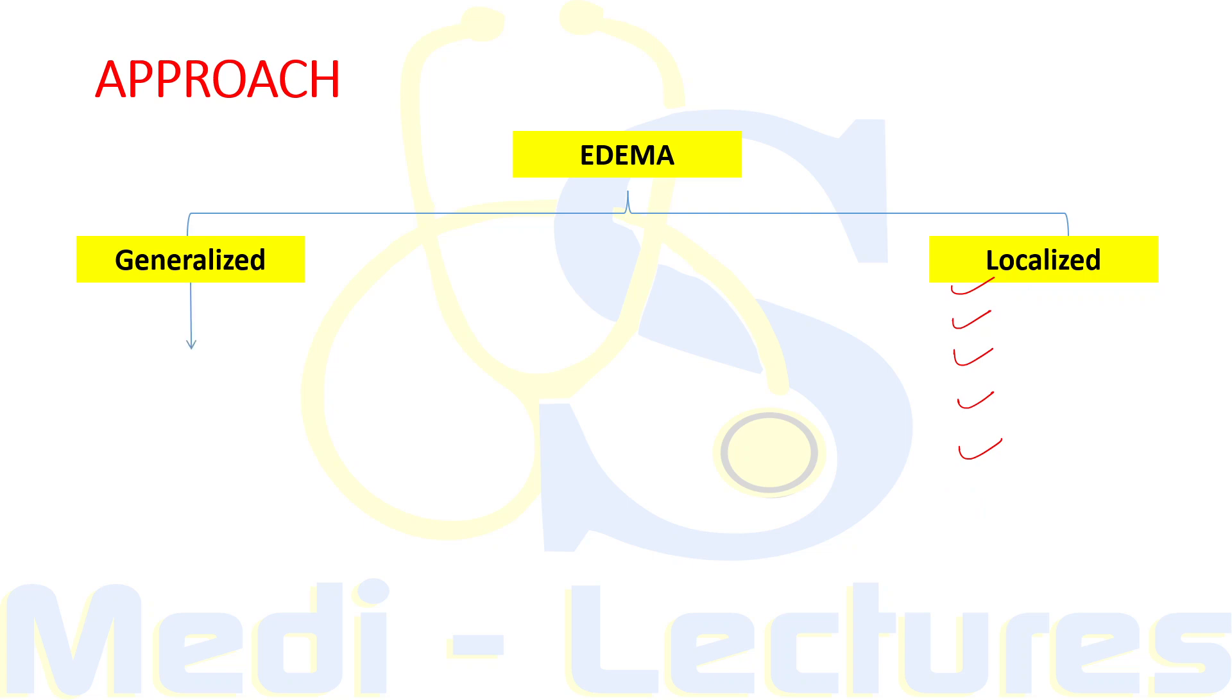If the edema is generalized, the first step is to rule out hypoalbuminemia. Hypoalbuminemia is defined as serum albumin less than 3 grams per deciliter. This can be due to cirrhosis, nephrotic syndrome, and severe malnutrition leading to protein deficiency. This hypoalbuminemia has to be ruled out with the help of history, physical examination, and lab tests. Once this is ruled out.